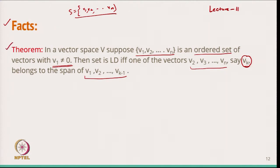In this theorem we take the vectors and one important condition is that V1 is not zero. If it were zero, we already have the theorem that if one of the vectors is zero then the set is linearly dependent. So we start with V1 non-zero, and the set is linearly dependent if one vector Vk is a linear combination of the previous vectors.